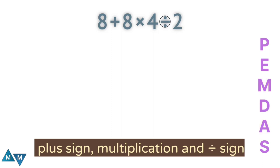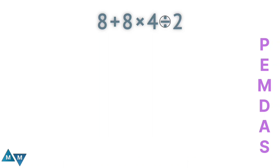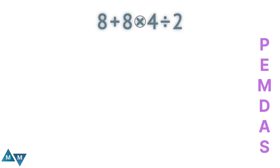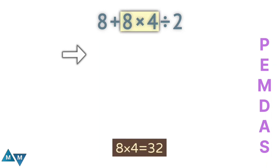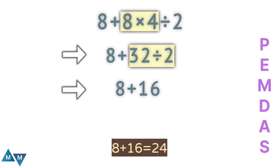The expression contains a plus sign, a multiplication sign, and a division sign. According to PEMDAS, multiplication and division have higher priority than addition. Since multiplication and division have the same priority, we move left to right. I see multiplication first, so eight times four is our first move, which equals 32. Then 32 divided by two equals 16.